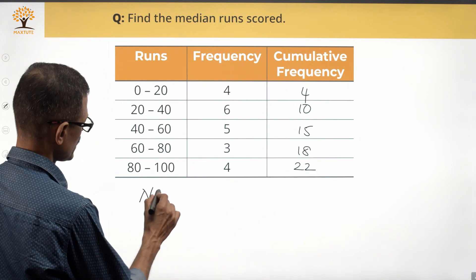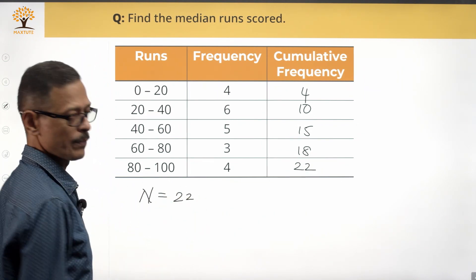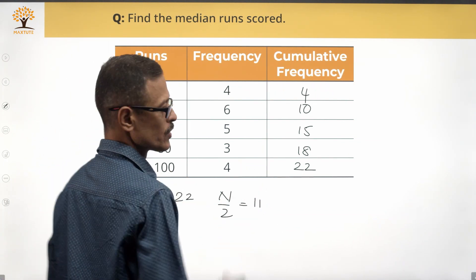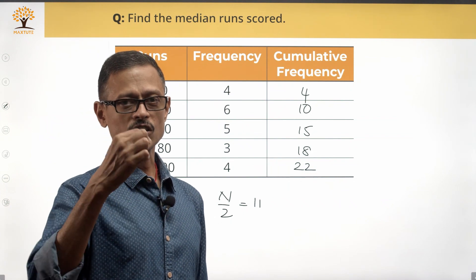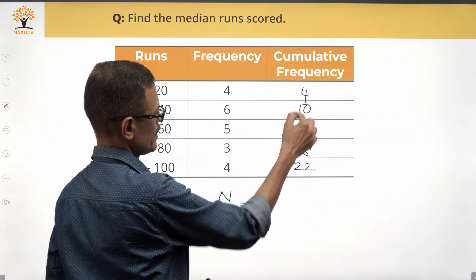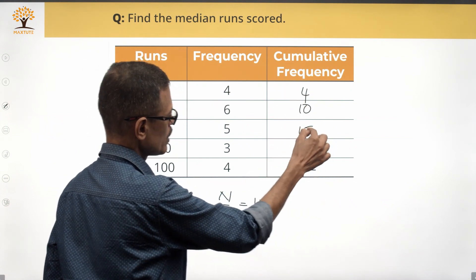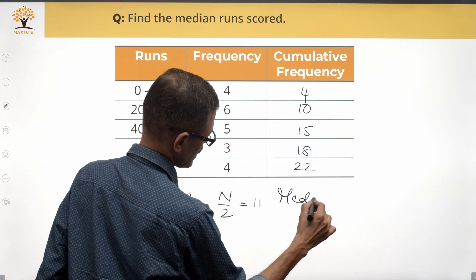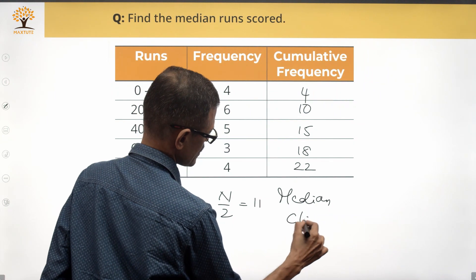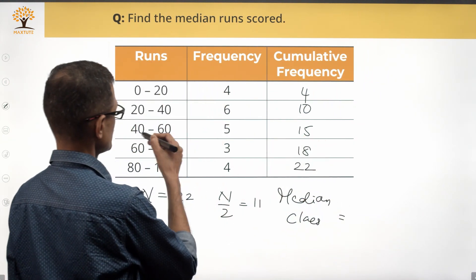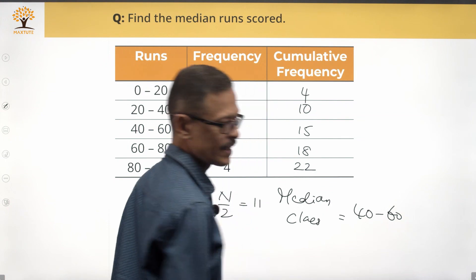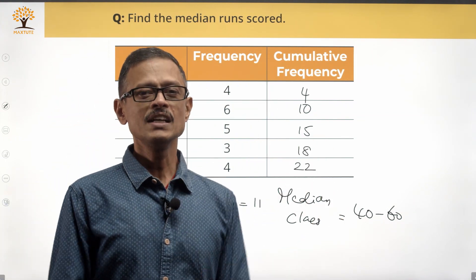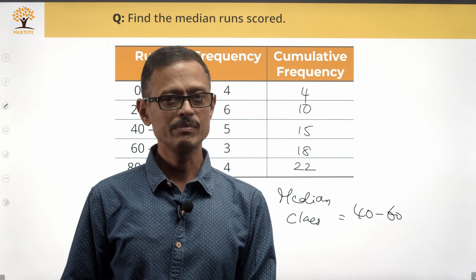So capital N in the formula is equal to 22. The middle value n/2 is equal to 11. In which class does the cumulative frequency cross 11? We have 4, 10 — then the next class goes from 11 to 15, so 11 lies in the 40–60 class. The median class is therefore 40 to 60.